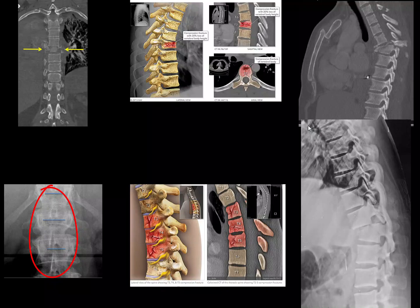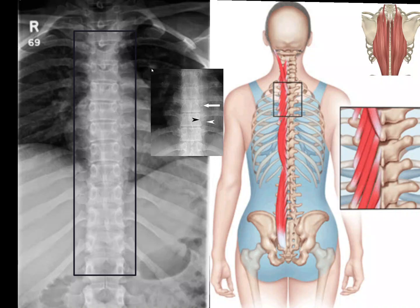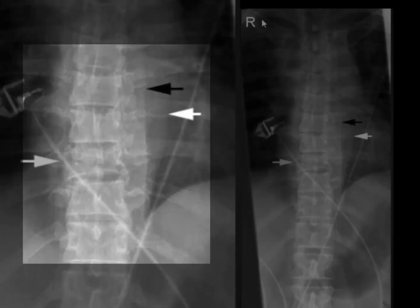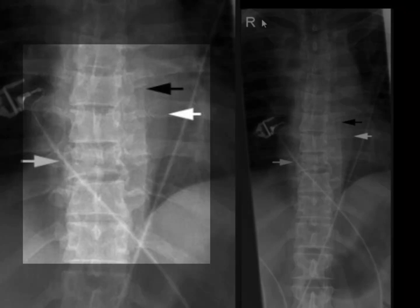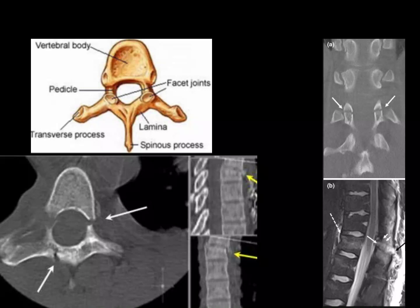Let's review the thoracic spine once again and take a look at that paraspinal stripe. It may be difficult to see a subtle fracture of the thoracic spine, but by looking at the paraspinal stripe, knowing that when there is a fracture there is swelling, the displacement of the paraspinal stripe gives you a clue that there might be a fracture. Another clue for fracture in the thoracic spine is to take a look at the pedicles. CT clearly shows a fractured pedicle in both the AP and lateral views of the spine.